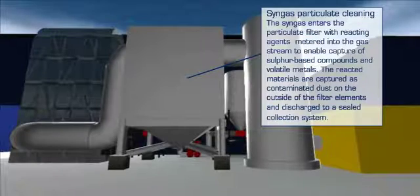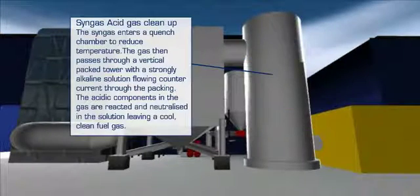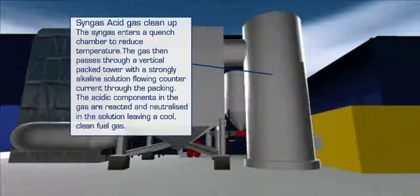The syngas flows to the particulate filter where a reacting agent is metered into the gas stream to enable capture of sulfur based compounds. The reacted powder coats the filter and traps contaminated dust, allowing the gas to pass through. The syngas then passes through a vertical packed tower containing a strongly alkaline solution. The acidic components react and are neutralized in the solution, leaving a cooled, clean fuel gas suitable for use in a gas engine.